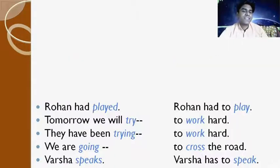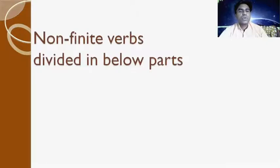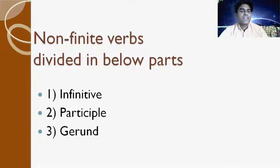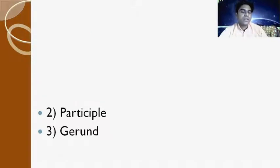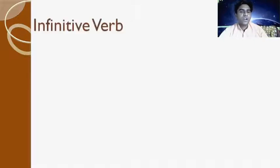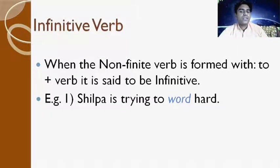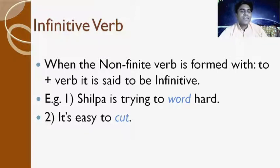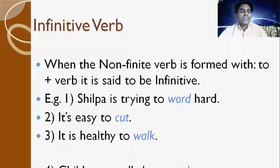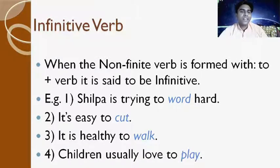Non-finite verbs are divided into three parts: infinitive, participle, and gerund. The infinitive is formed with 'to' plus verb. Examples: 'It is easy to cut,' 'It is healthy to walk,' 'Children usually love to play.'